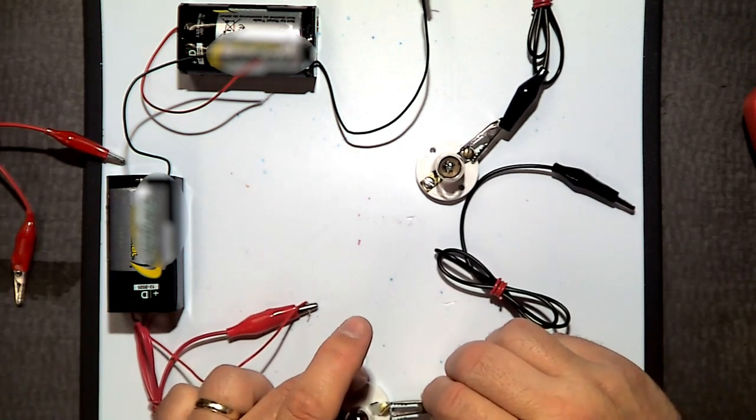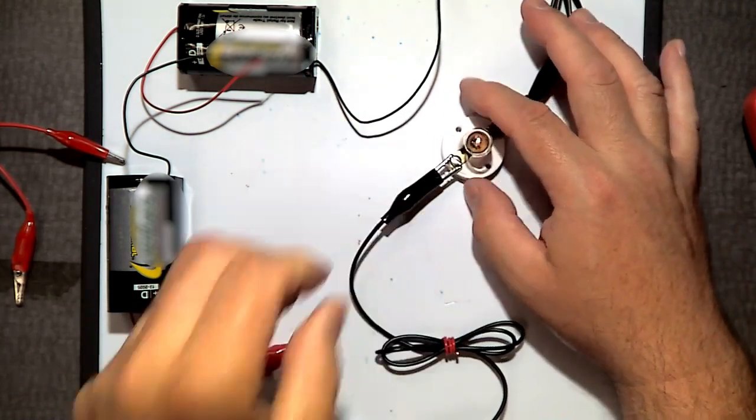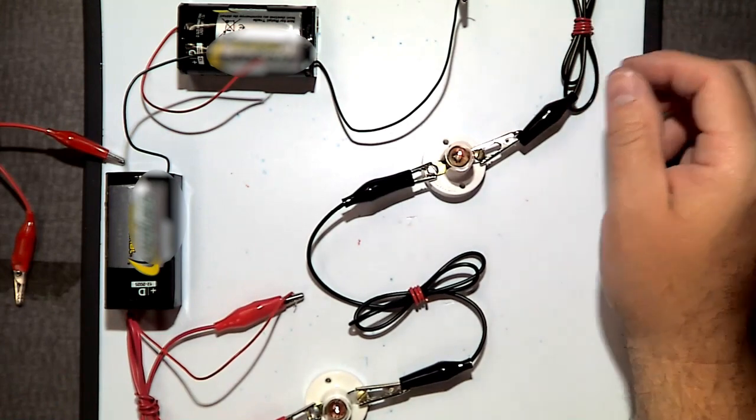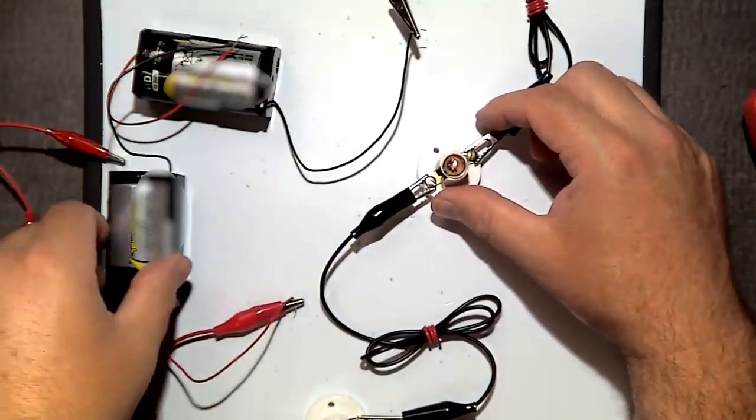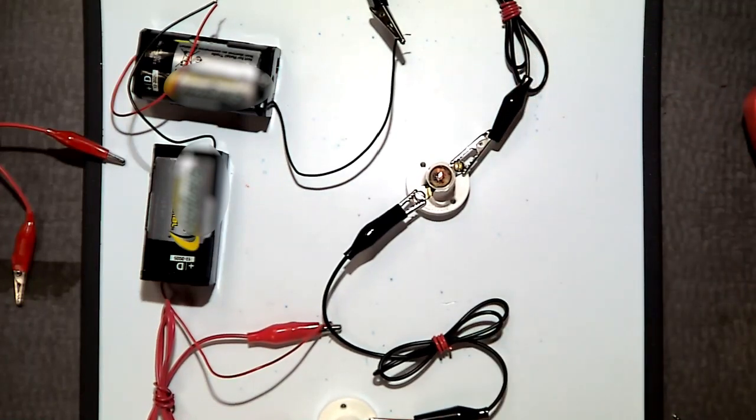Now I need one more. Okay, so now we're back to circuit B, where we have the two batteries and two bulbs wired in series.